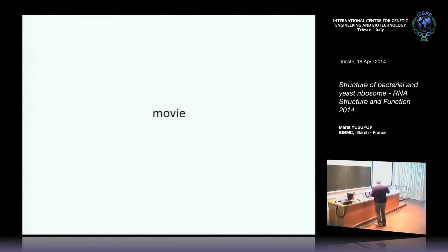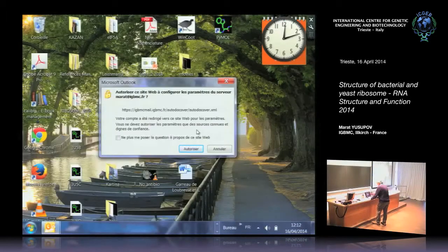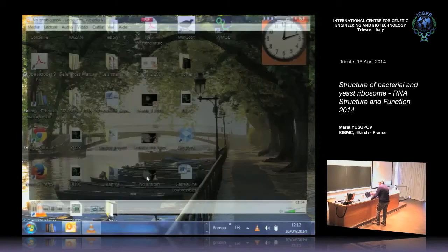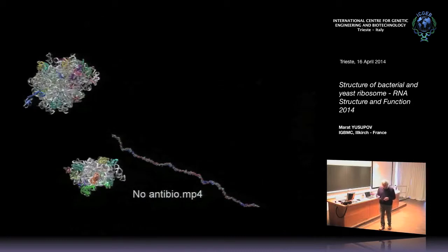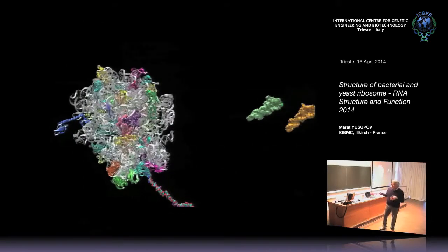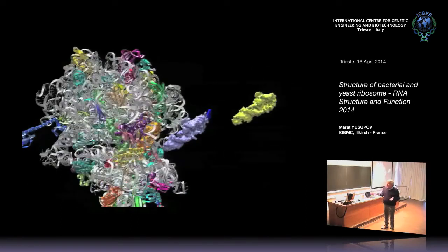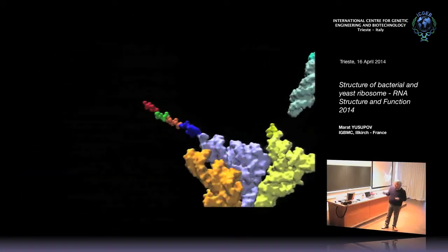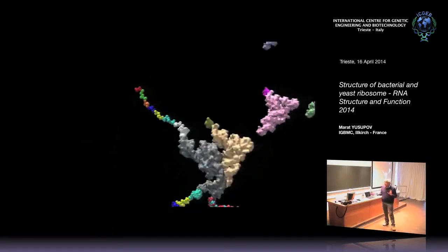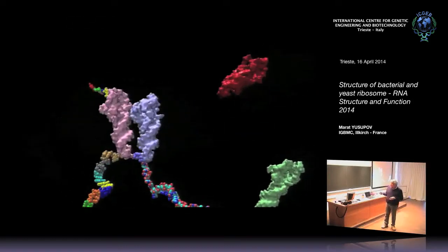I want to show a short movie we prepared for students to show how the ribosome works. This shows the large subunit, small subunit, initiation complex with messenger RNA, and one initial tRNA. To simplify the movie, the tRNA comes without a Tu factor — like non-enzymatic translation. You can see how the tRNA moves through the ribosome and each time one additional amino acid is incorporated into the growing peptide.